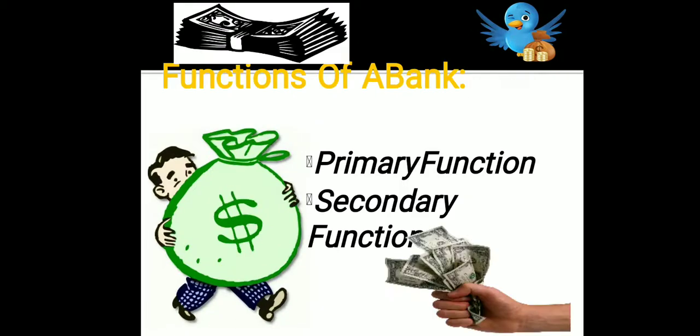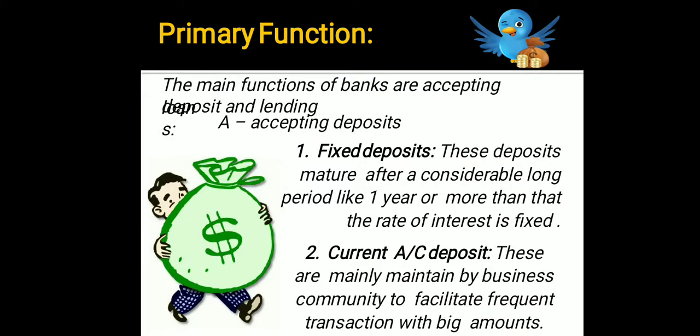There are basically two types of banking functions: primary functions and secondary functions. Primary functions are basically accepting deposits and lending loans. Under accepting deposits, we have fixed deposit, current deposit, recurring deposit, and saving deposit.